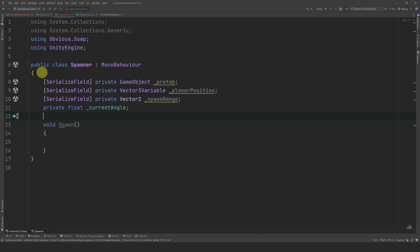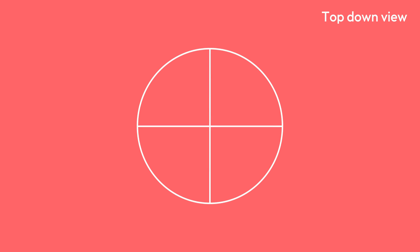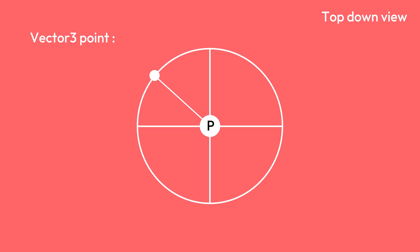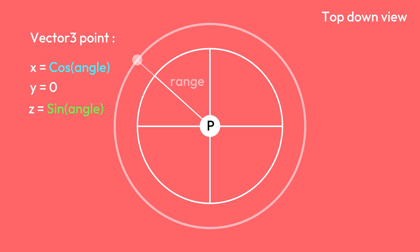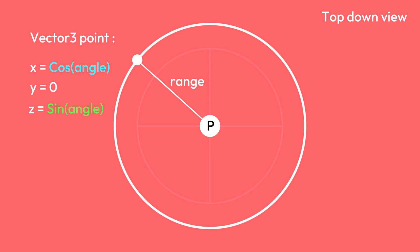Now let's implement the spawn method. To explain the spawning logic, let me do a small visual example. Let's imagine the center of the circle is our player. We want to spawn on one side, so let's say 180 degrees. We then add some randomness, which might change our angle to 140 degrees. We simply need to get the world coordinates of this point. The x-coordinate equals the cosinus of our angle, y is 0 because we are in 3D, and z equals the sinus of our angle. We then multiply this vector by the range to get a nice spawn position.